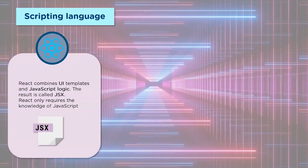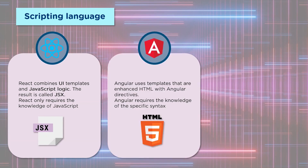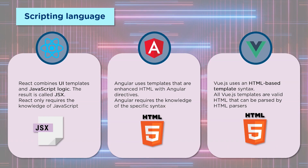Moving on to scripting languages: React combines UI templates and JavaScript logic, resulting in a new language called JSX, so React only requires knowledge of JavaScript. Angular uses HTML-based templates, and you can also inject JavaScript code into HTML using a clever implementation called Directives — you can create a class and inject it into HTML. Angular also supports TypeScript, a compiled language developed by Microsoft that is very similar to Java and C# in syntax. Vue again uses HTML-based templates, using HTML5 throughout for the UI and a combination of JavaScript for business logic. All Vue templates are valid HTML and can be parsed by HTML parsers.